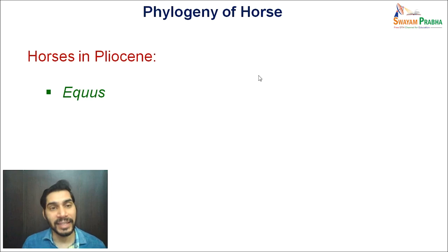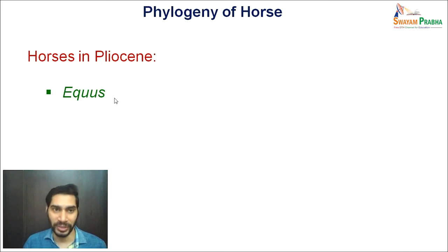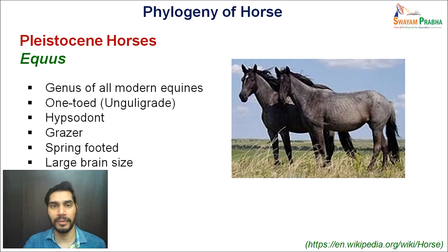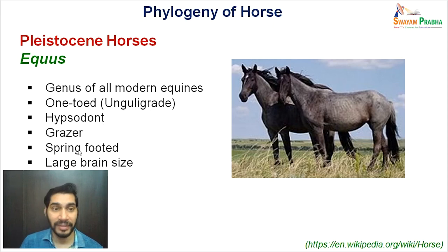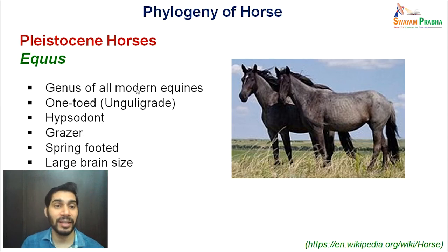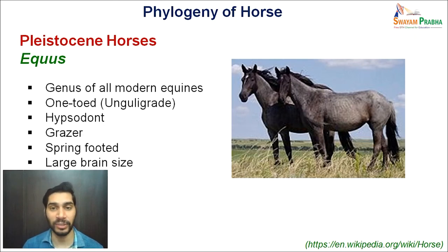Lastly, the modern form that evolved in the Pleistocene epoch is Equus. In the Pleistocene, Equus arrived — the genus of all modern equines. It is one-toed and unguligrade, hypsodont in nature, a grazer, spring-footed, and a large-brained organism. The modern horse has all the characteristics discussed in the initial part of our lecture — Equus, present in the Pleistocene, had reached the condition where all these characteristics are seen.